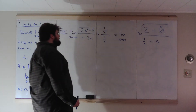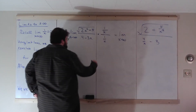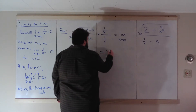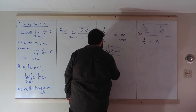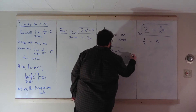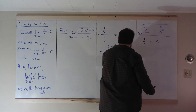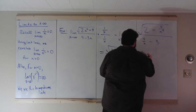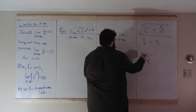Now the limit equals: applying limit laws, √(2 + 0) over (0 − 3), which is √2 over −3, so the answer is −√2/3.